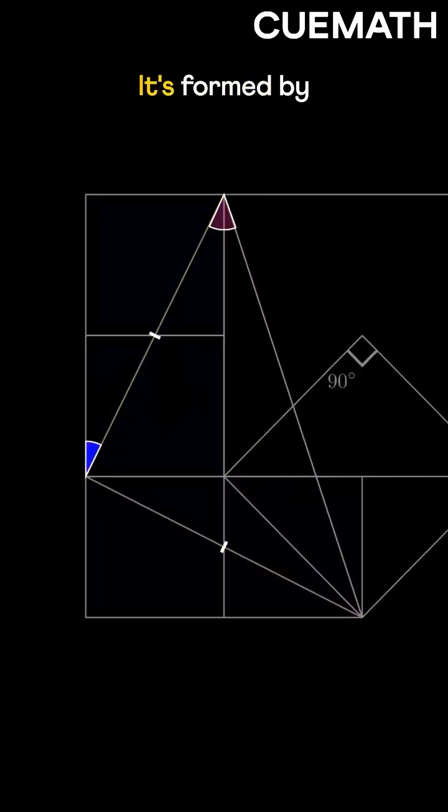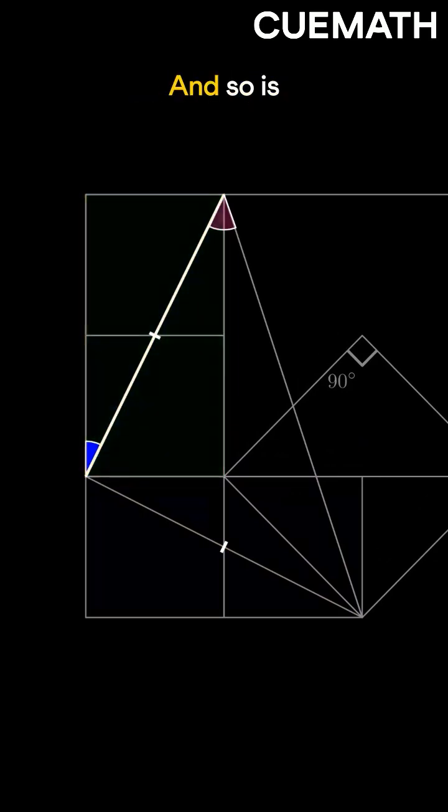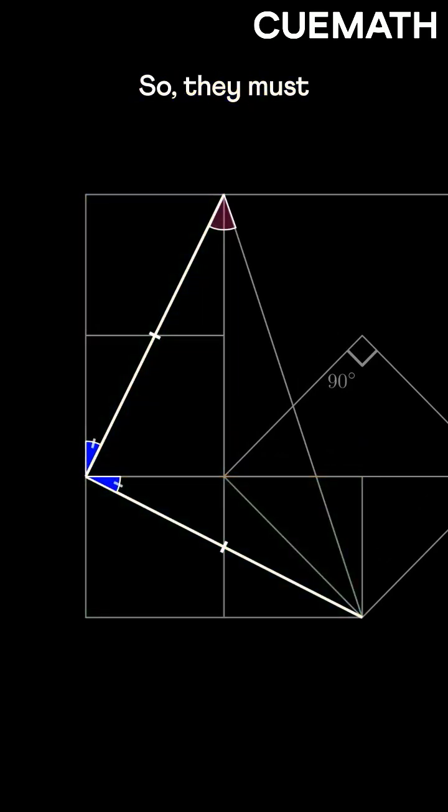Now look at this angle. It's formed by the diagonal on the longer side of the rectangle, and so is this one. So they must be equal, say x.